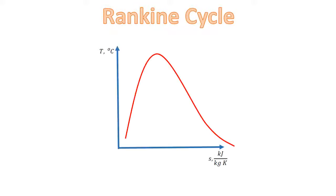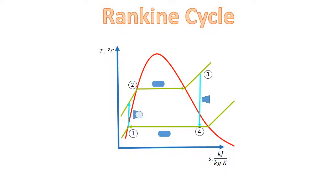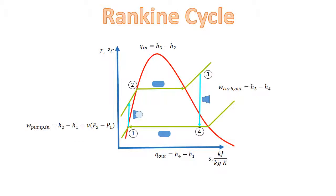The temperature-entropy diagram is the following. The green lines represent the pressure, which is constant. The blue lines represent isentropic processes. The formulas used are the following. As you can see, all formulas have H's. This is a property called enthalpy.